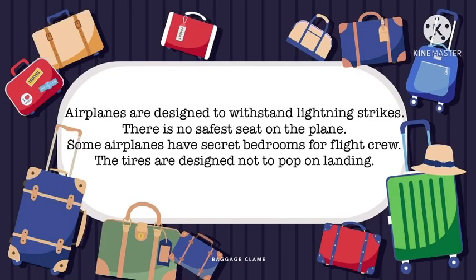Airplanes are designed to withstand lightning strikes. There is no single safest seat on the plane. Some airplanes have secret bedrooms for flight crew. The tires are designed not to pop on landing.